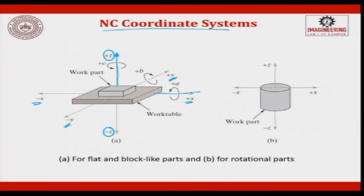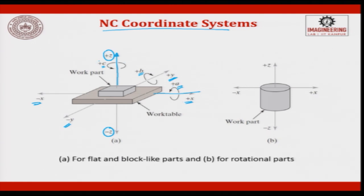When you have to fix an object freely floating in air, you also need to fix the rotation axes. Rotation about x becomes the A axis, rotation about y becomes the B axis, and rotation about z becomes the C axis. So you now have 6 axes for nomenclature: x, y, z, and then A, B, and C. You can also have plus A and minus A depending on clockwise or anti-clockwise motion.